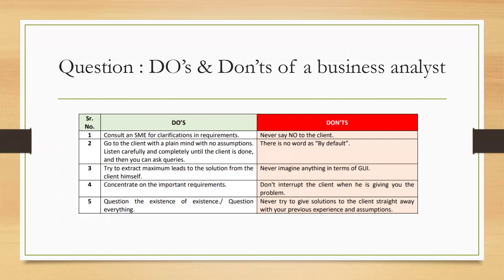Question 12: What are the do's and don'ts of a business analyst? Do's: consult an SME for clarifications, go to the client with a plain mind and no assumptions, listen carefully until the client is done then ask queries, extract maximum leads to the solution from the client, and question the existence of everything. Don'ts: never say no to the client, never assume anything, don't interrupt the client, and never try to give solutions straight away based on previous experience. Include more points and justifications in your answer.